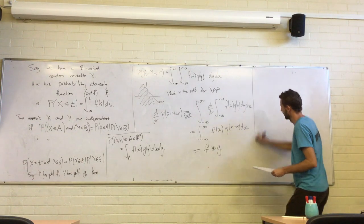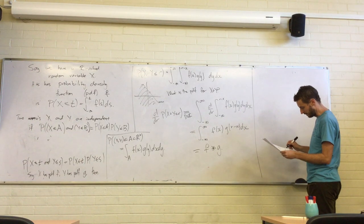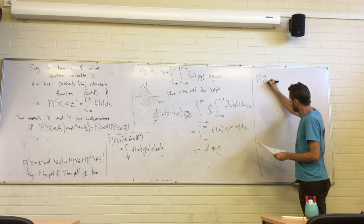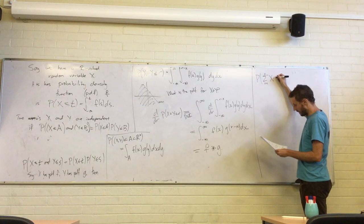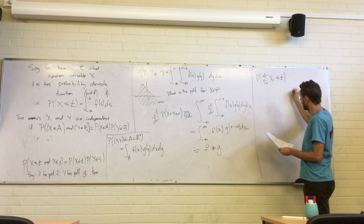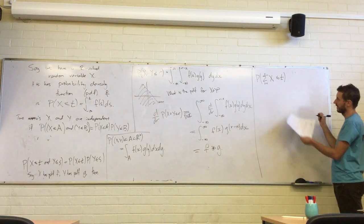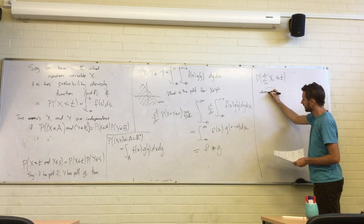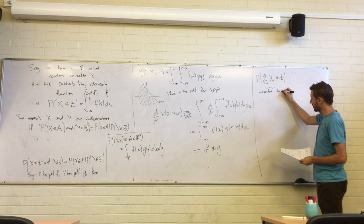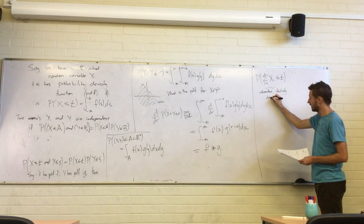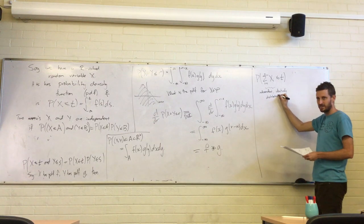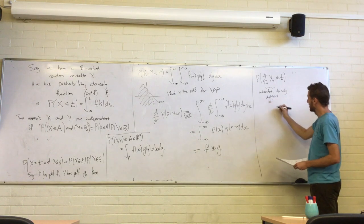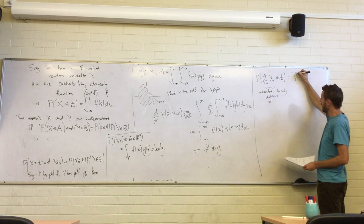Let's see a few easy corollaries of that, basically running the same argument over a few times. We've got a sum of random variables. Let's assume these are independent and identically distributed — IID. The PDF of that sum is the convolution power of the PDF — convolving the function with itself n times.